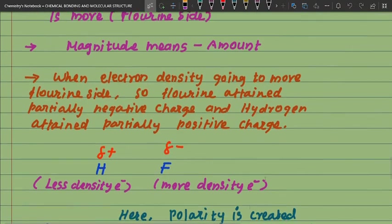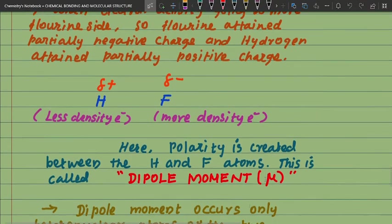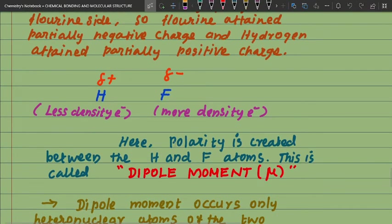Here hydrogen attains less electron density, so it becomes partially positive (δ+). At the same time, fluorine gets more electron density, so it attains a partially negative charge (δ−). Polarity is created between the H and F atoms — this is called the dipole moment, represented by the symbol mu (μ).